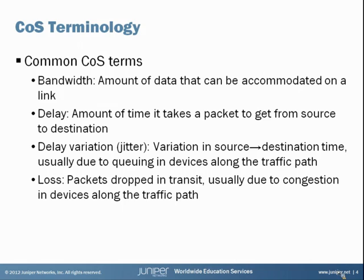If you're sending web traffic, a little bit of variation doesn't make a big difference. But if you were trying to run a VoIP call, it could make a huge difference that the packets are not coming in a consistent stream — that could really affect the quality of the call. The final term is loss. Packets come into a device, that device is becoming congested, and so some packets have to get dropped. That packet dropping is considered loss from a CoS perspective.